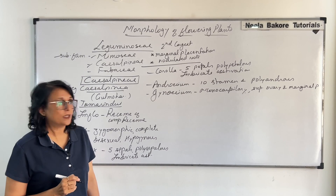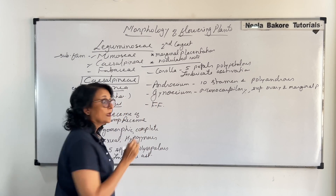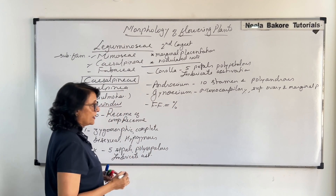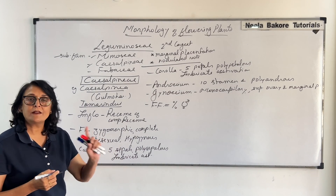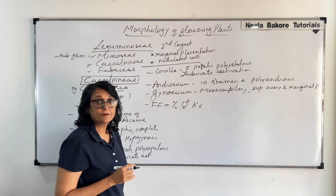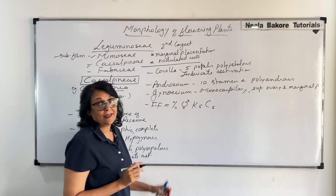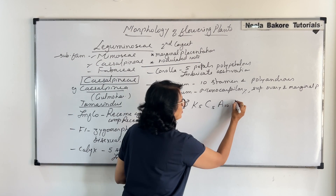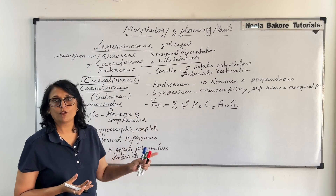Based on this information we will write the floral formula. Starting with symmetry: it is zygomorphic, bisexual — both reproductive whorls are present. Calyx: five free sepals, so no bracket around five. Corolla: five free petals. Androecium: ten free stamens. Gynoecium: one carpel, ovary superior. This is a very simple floral formula.